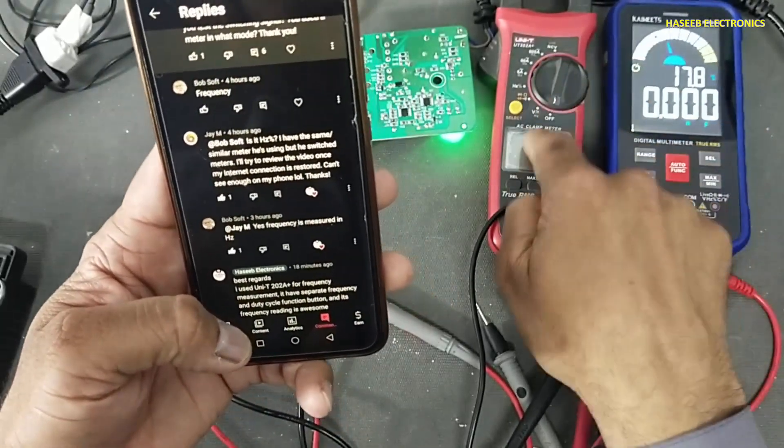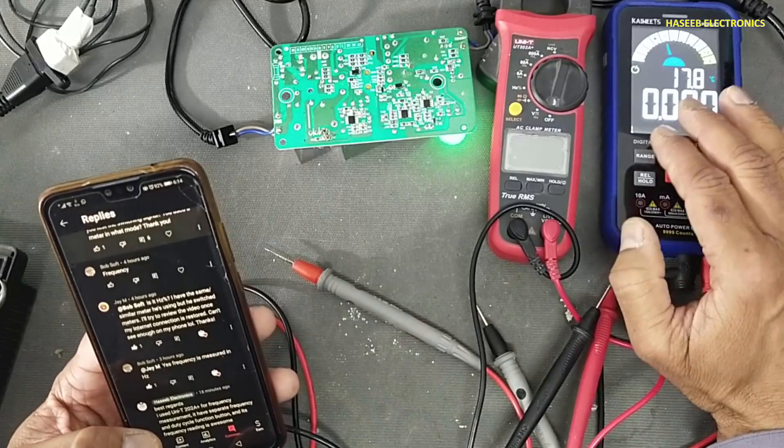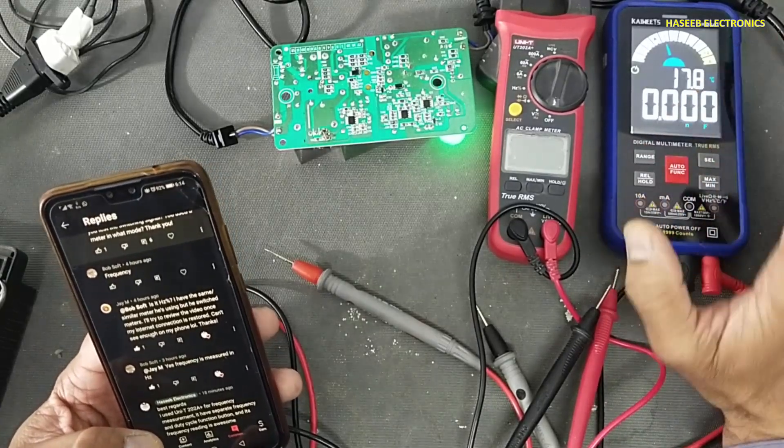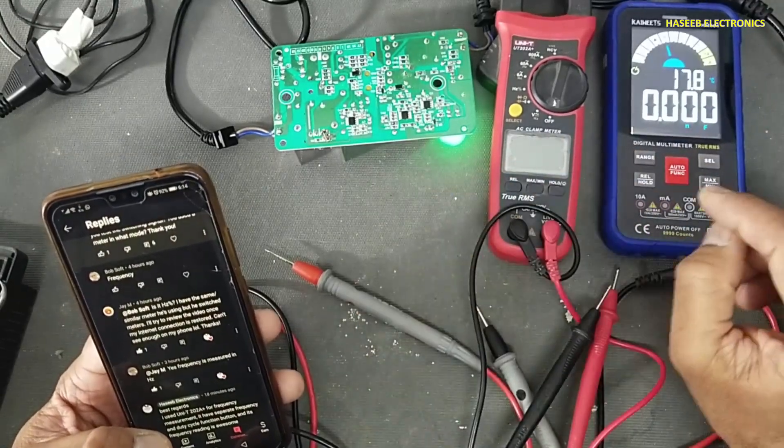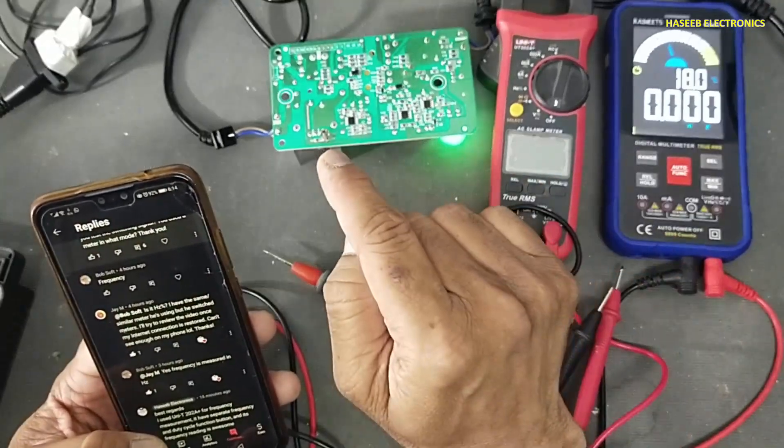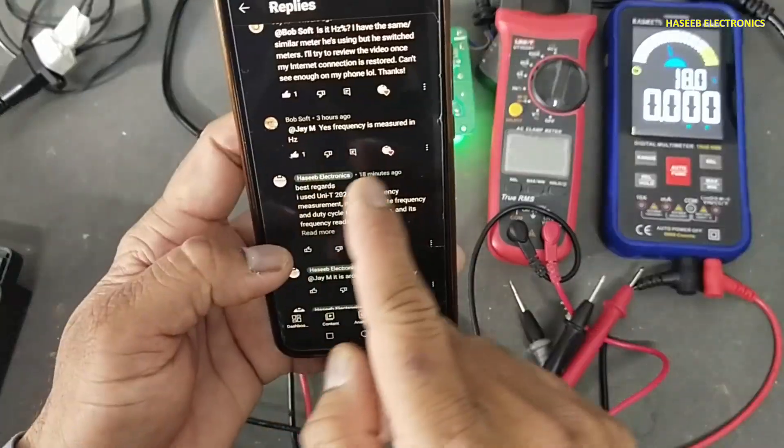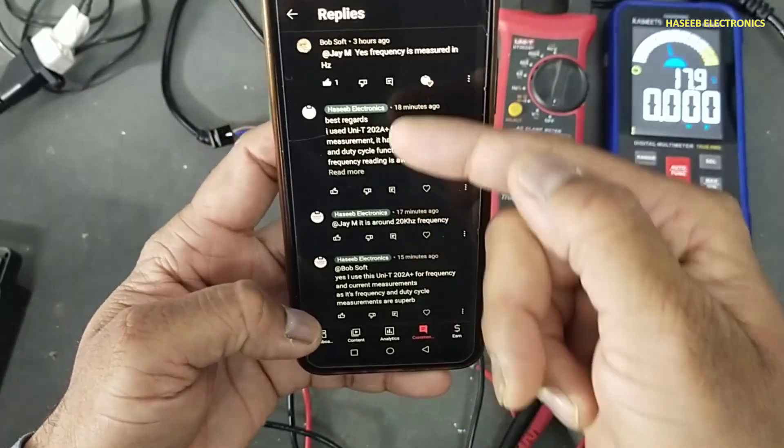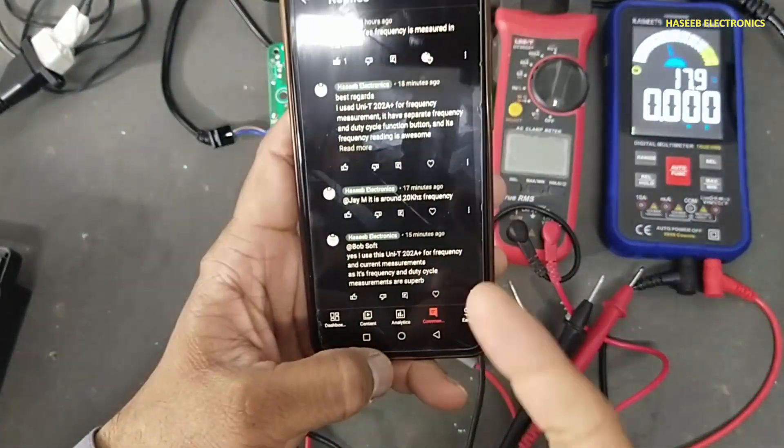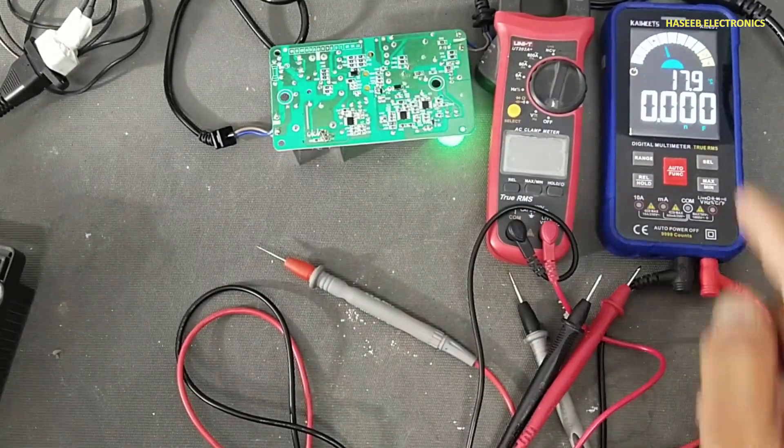But why I used this one? This multimeter can measure frequency in megahertz, but some multimeters don't have a good response to test PWM signal, especially when we are testing SMPS circuits. So let's see it practically why I use this multimeter.